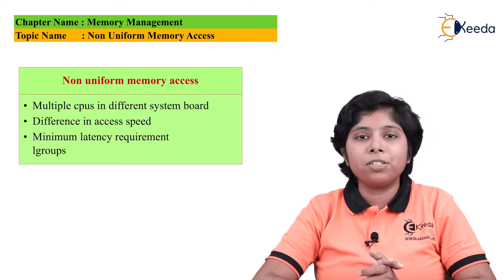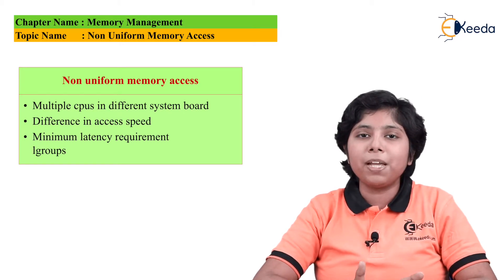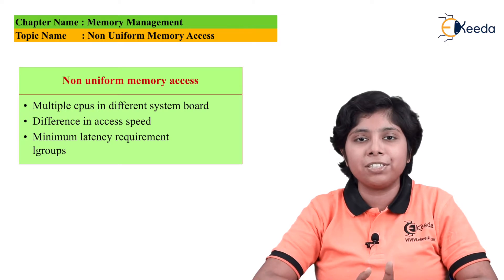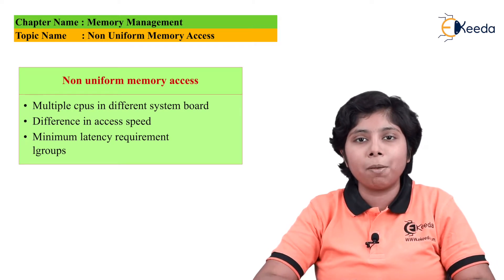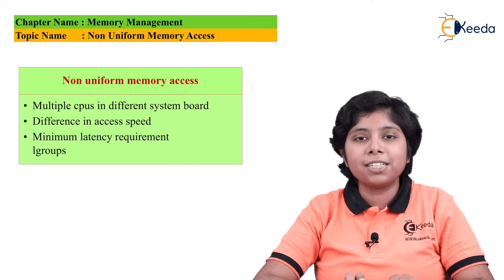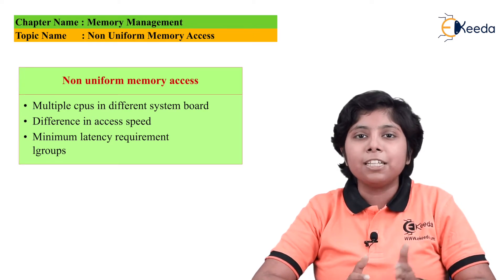Suppose we have processes which require a number of pages where the page and the page frames will be allocated during the entire process of execution. It can scatter through the different system boards of memory.